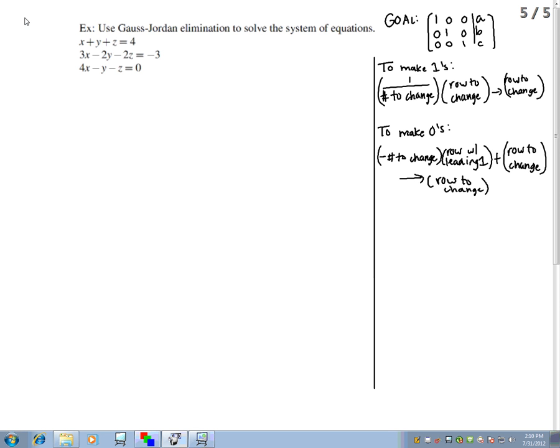Use Gauss-Jordan elimination to solve the system of equations. We have three equations here. x plus y plus z equals 4. 3x minus 2y minus 2z equals negative 3. And 4x minus y minus z equals 0.